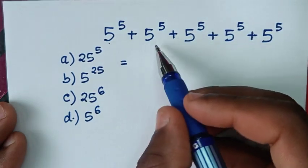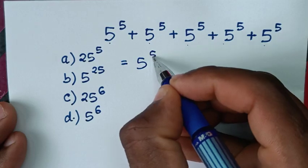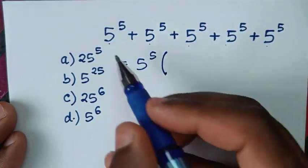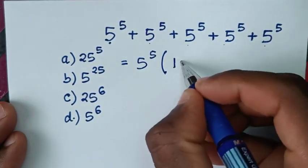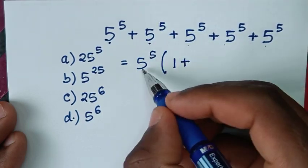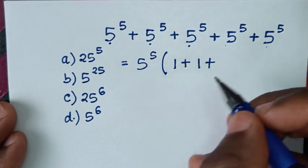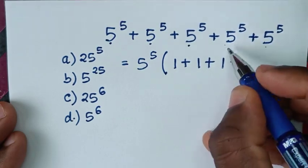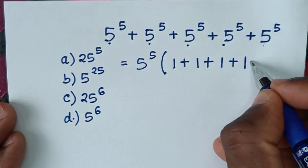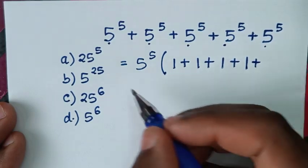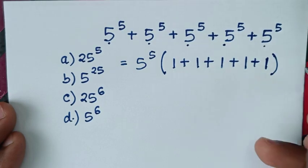From here, 5 power 5 is common, so we'll take 5 power 5 out of the bracket. Then this 5 power 5 divided by 5 power 5 is 1, plus 1, plus 1, plus 1. Then bracket.